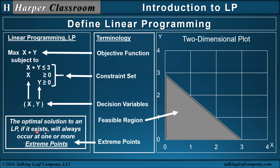Extreme points are contained in this loosely stated LP theorem: the optimal solution to an LP, if it exists, will always occur at one or more extreme points. An extreme point is a feasible point at the extreme corner of the feasible region — sometimes called corner points. In this simple example we have three extreme points. The LP theorem says that if you have an optimal solution, that optimal solution will contain at least one extreme point, and it can contain more than one. It does not say that every point in the optimal solution has to be an extreme point, as points along a line segment between extreme points can also be optimal.